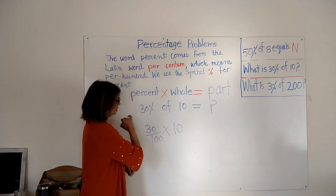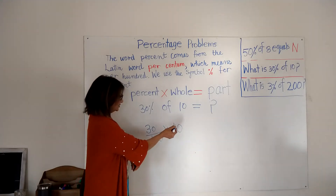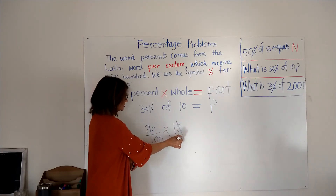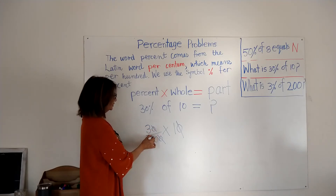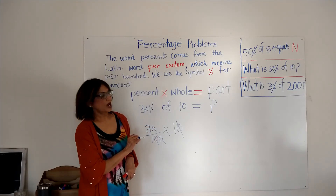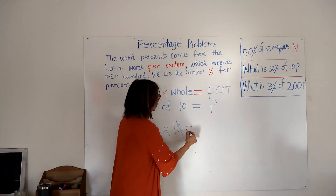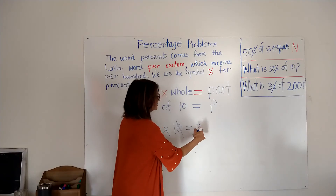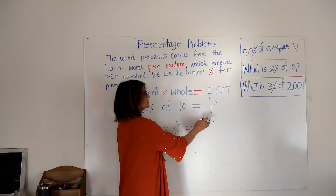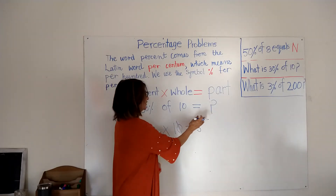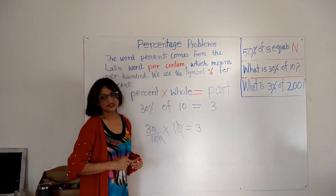We can cancel zeros: cancel this zero with that zero. On top we have 3 times 1, which equals 3. That is our answer — our part is 3. So: 30 percent of 10 equals 3.